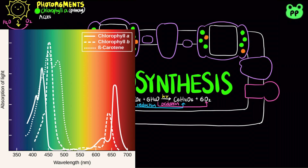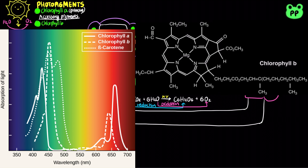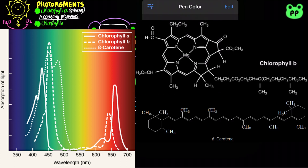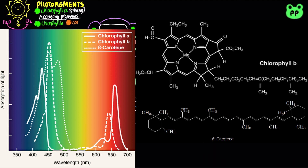In addition to chlorophyll A, plants also contain secondary photopigments known as accessory pigments, including chlorophyll B and carotenoids, which broaden the absorption spectrum of a plant. Accessory pigments also function in the dissipation of excessive light energy, a process known as photoprotection.